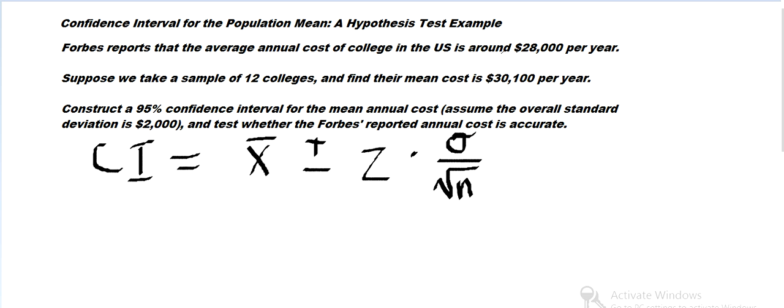Times the standard deviation over the square root of the number in the sample. So we're going to plug these numbers in. This is the mean. Then the Z value we need to find. Then we're given the standard deviation, and then we're given N, that's the number of colleges.